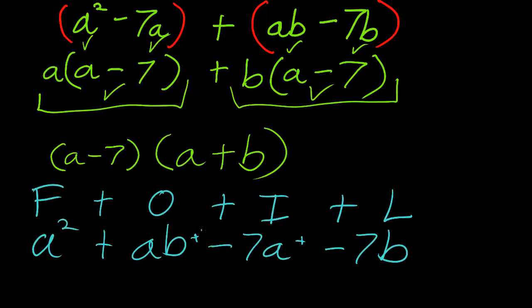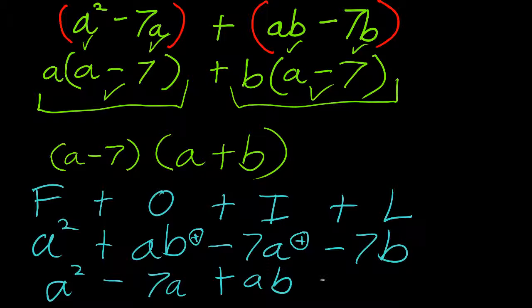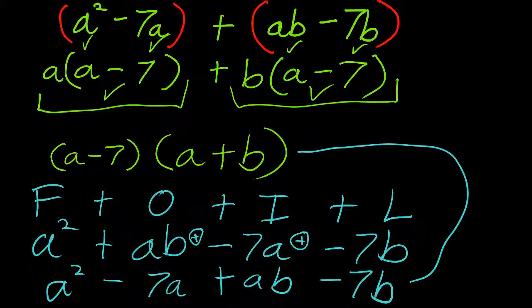Well, now that I have my imaginary plus signs, they're not imaginary, they're really there, only we don't usually write them, I can now switch my terms around. A squared minus 7a plus ab minus 7b. This is exactly what I started with, and that means that this is the correct factorization.